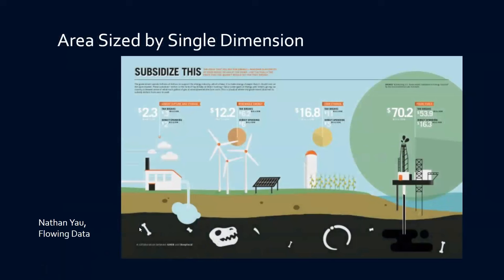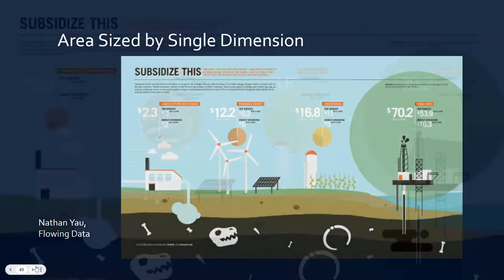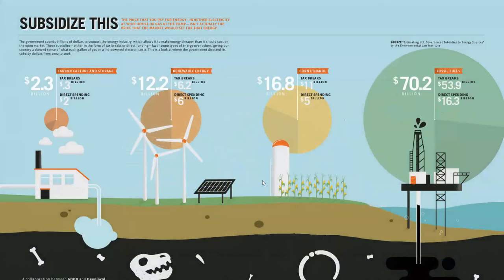In this example, the bubble sizes are disproportionate. While 70.2 billion is a much bigger number than 16.8 billion, the bubbles are still scaled incorrectly. In the following example, we can see that the bubbles have been fixed. The 70.2 billion bubble is still way bigger than the other bubbles, but at least the proportions are now better.